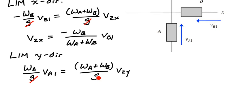Again, the g's cancel here, and solving for V2y, I get that V2y is WA divided by quantity WA plus WB times VA1.